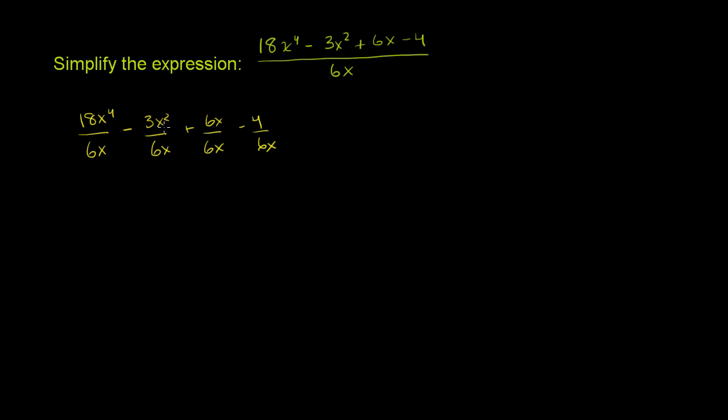The other way to think about it is that we're multiplying this entire expression. So this is the same thing as 1 over 6x times this entire thing, times 18x to the 4th minus 3x squared plus 6x minus 4. And so here, this would just be the straight distributive property to get to this.